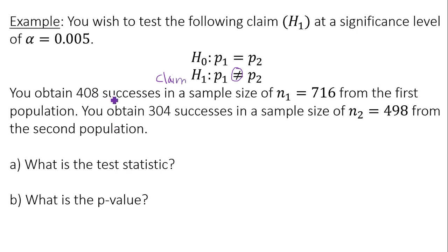You obtain 408 successes in a sample size of 716 from the first population. You obtain 304 successes in a sample size of 498 from the second population.